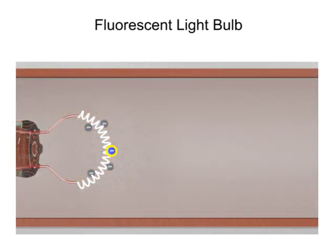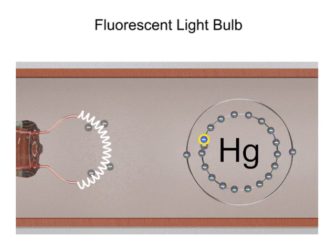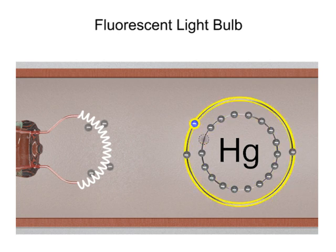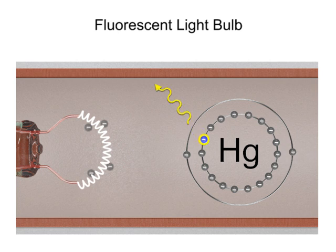If one of the free electrons collides with an electron of the mercury vapor, the electron is bumped from a lower to a higher energy level. The electron quickly returns to its lower energy state and in the process releases an ultraviolet photon.